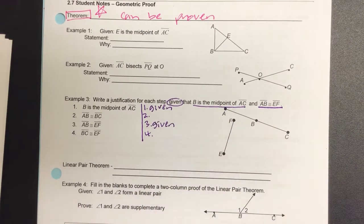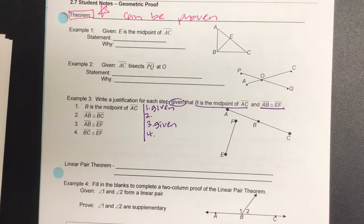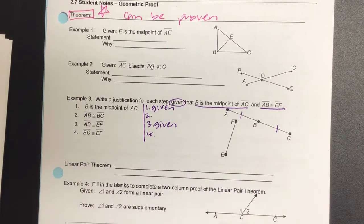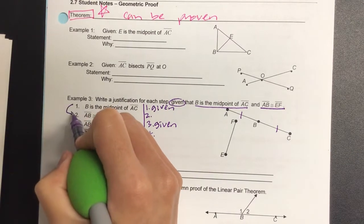Okay, so here I go. If B is a midpoint of AC, what do I know about AB and BC? They're congruent, and that is listed on statement number two. And that will be definition of midpoint.